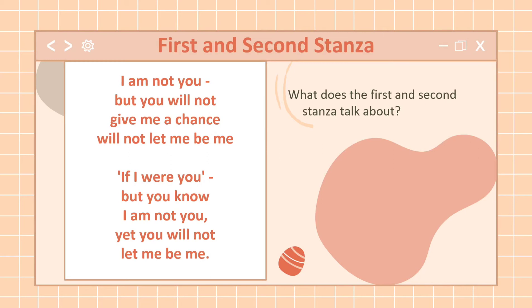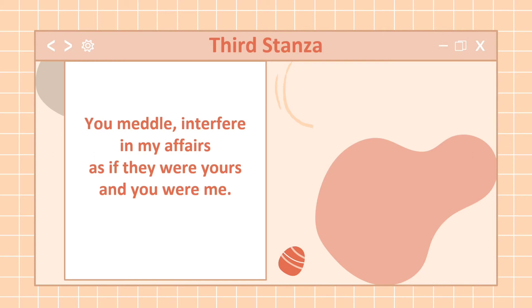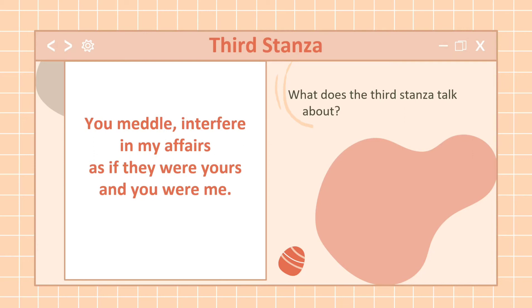Now let's proceed to the third stanza: 'You meddle, interfere in my affairs as if they were yours and you were me.' In the third stanza, the persona shows how these colonizers, oppressors, or invaders influence them — meddling in and interfering with their actions and way of life, which is supposed to be at peace.